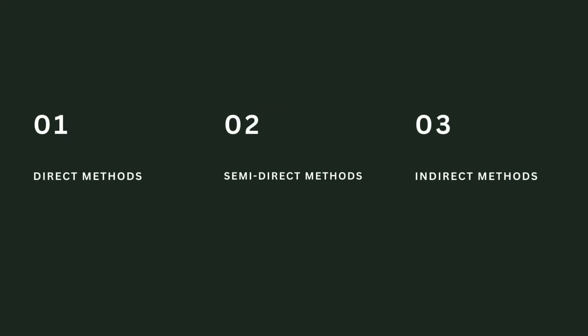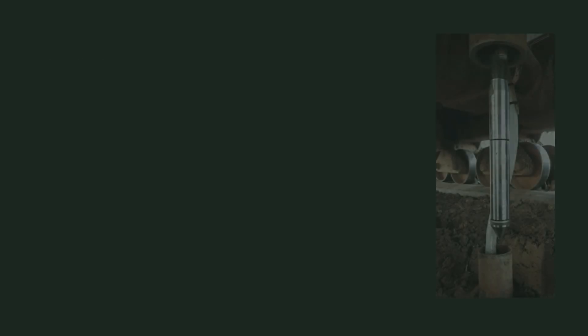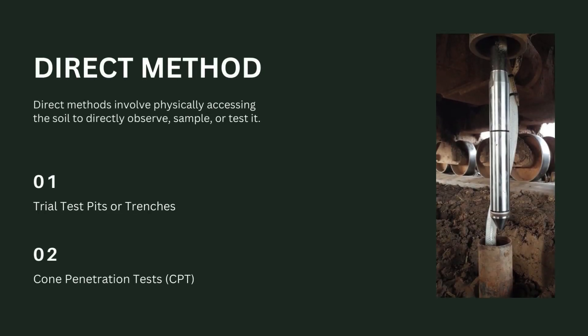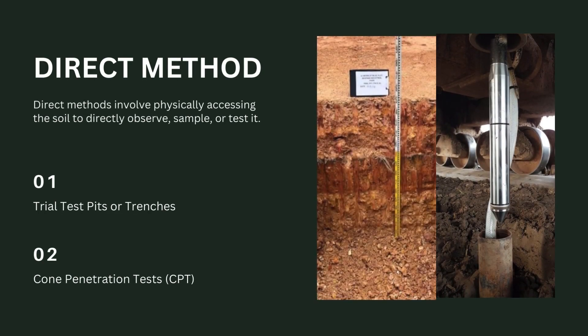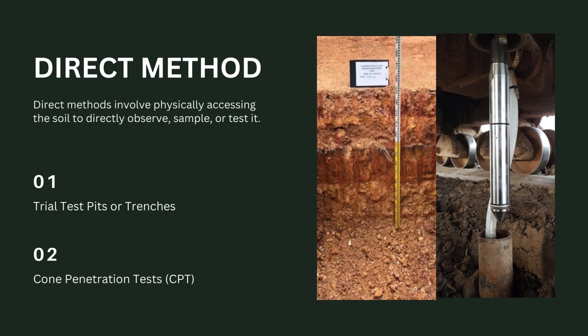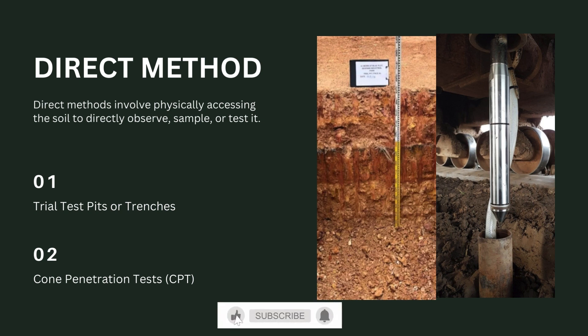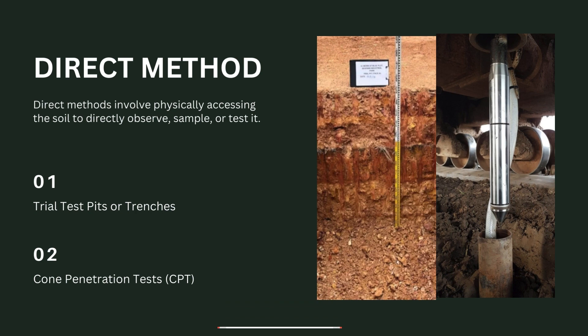Soil exploration methods can be classified into direct methods, semi-direct methods, and indirect methods. Direct methods involve physically accessing the soil to directly observe, sample, and test it. These include trial test pits or trenches and the Cone Penetration Test. In direct methods, the drilling, sampling, and testing procedure is conducted simultaneously and the results are obtained directly.